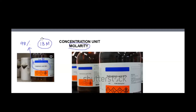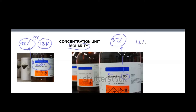So what does this mean — 18 M or 98%? Similarly, if you look for hydrochloric acid, that is HCl, you can see 37% on the bottle. Or you can also see 12.1 capital M. What does this capital M represent? This actually represents molarity.